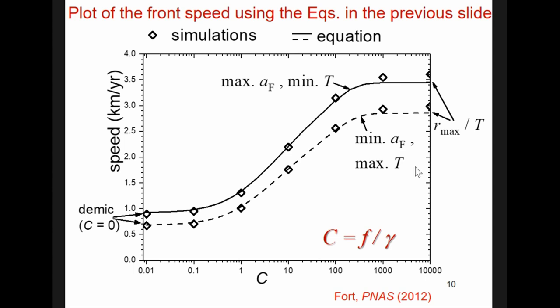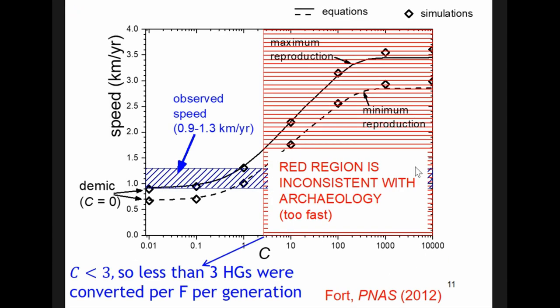For C or F equal to 0, there is no cultural transmission, and we have a pure demic model. The higher the value of C, the more hunter-gatherers become farmers per generation, and the spread is faster. So, these are the theoretical speeds, and how do they compare to the data? Archaeological data implies, if we use a database of about 2000 early Neolithic sites in Europe, that the spread rate was between 0.9 and 1.3 kilometers per year. So, this is the observed range, this blue rectangle.